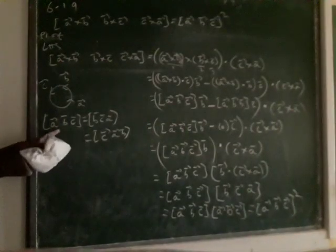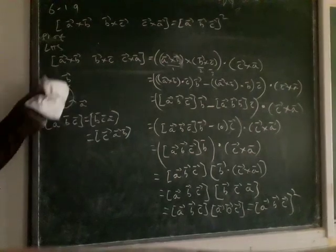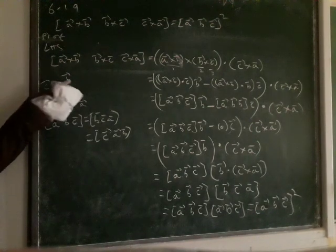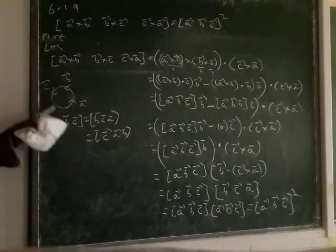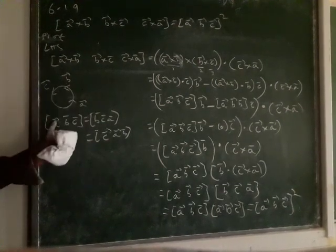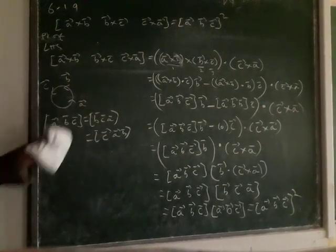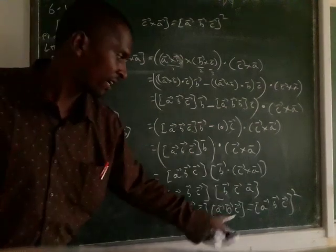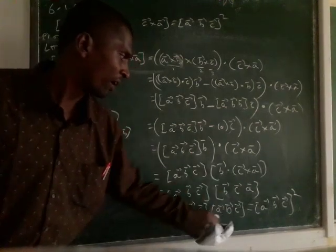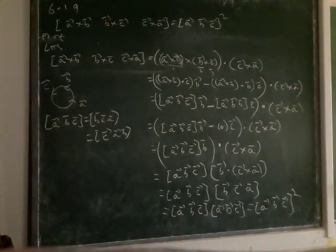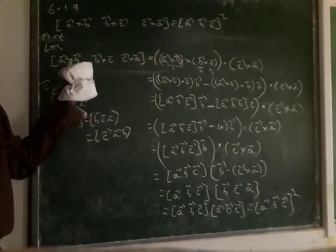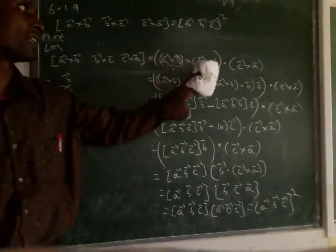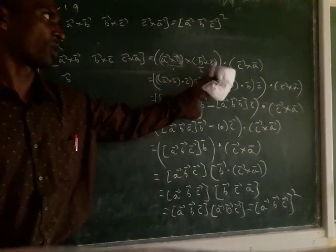So we are able to get LHS equal to RHS. Just remember, just follow the order: start from A — A, B, C; start from B — B, C, A; start from C — C, A, B. So all three combinations are equal. So instead of B, C, A, we can write A, B, C. The multiplication becomes squared. Simple thing — just know how the box product is written as a multiple of dot and cross products: first term cross second term dot third term.